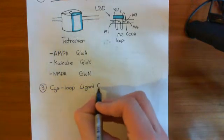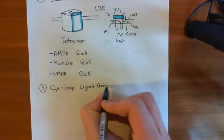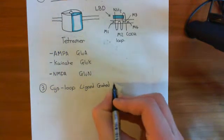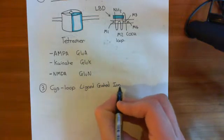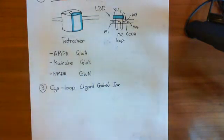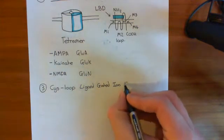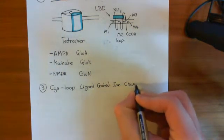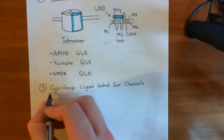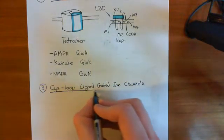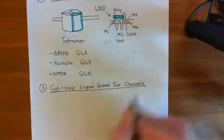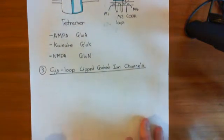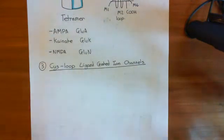These are called the cis-loop ligand-gated ion channels, although the P2X receptor-like family also has a lot of cis-loops in their extracellular domain. So maybe they would have a better claim to the title of cis-loop ligand-gated ion channels. However, these were discovered long before we even knew that P2X receptors existed, and they had a single cis-loop, so they were called the cis-loop ligand-gated ion channels.